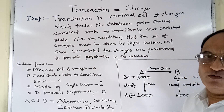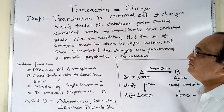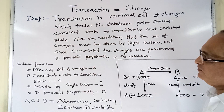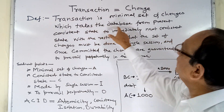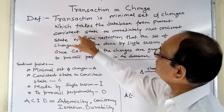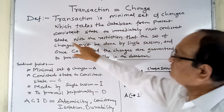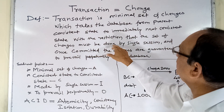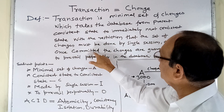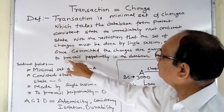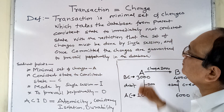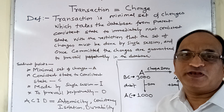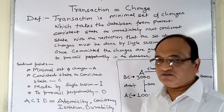From the broad definition we come to the scientific definition: a transaction is a minimal set of changes which takes the database from a present consistent state to the immediately next consistent state, with the restriction that the set of changes must be done by a single session, and once committed, the changes are guaranteed to prevail perpetually in the database.